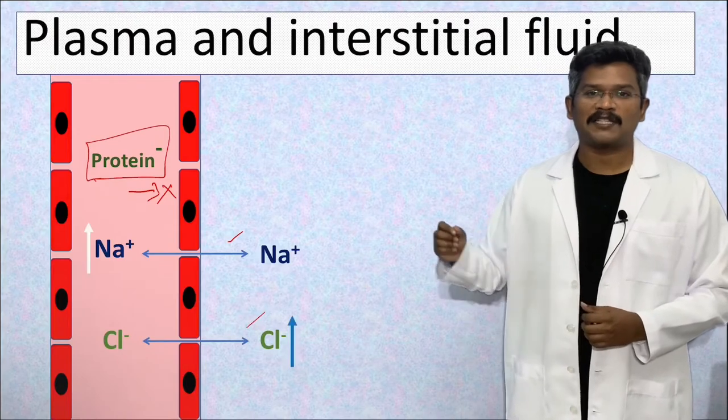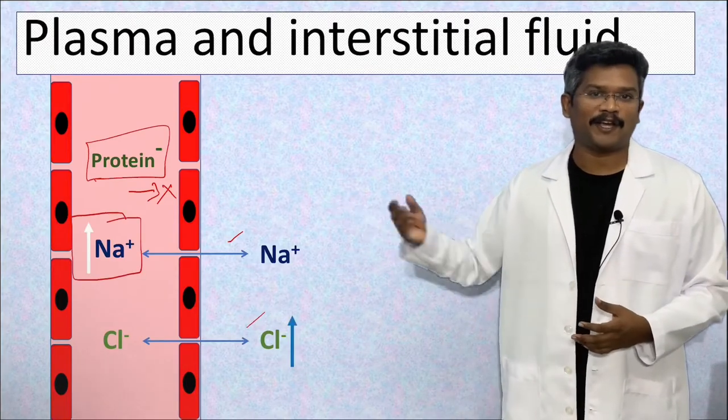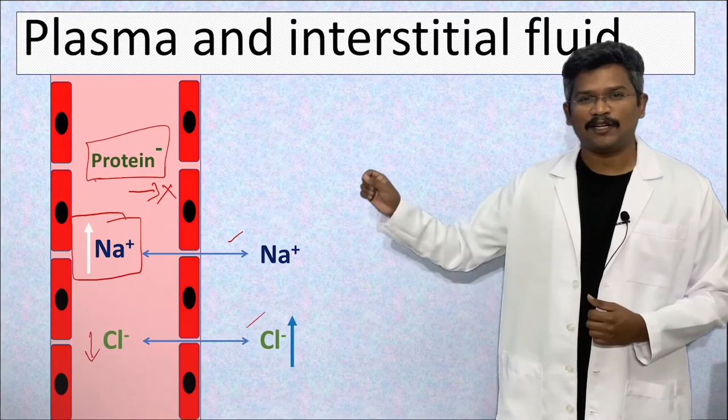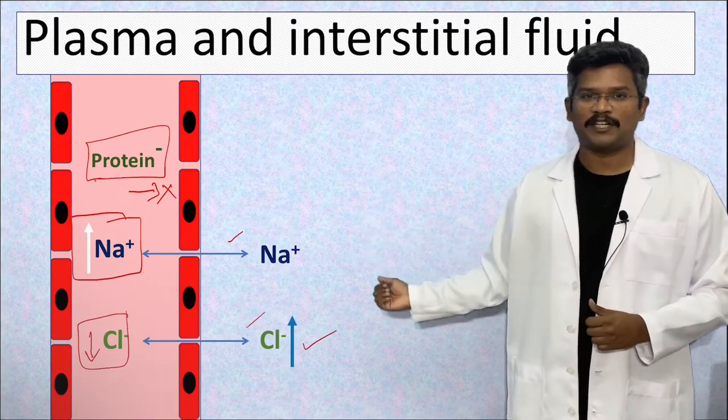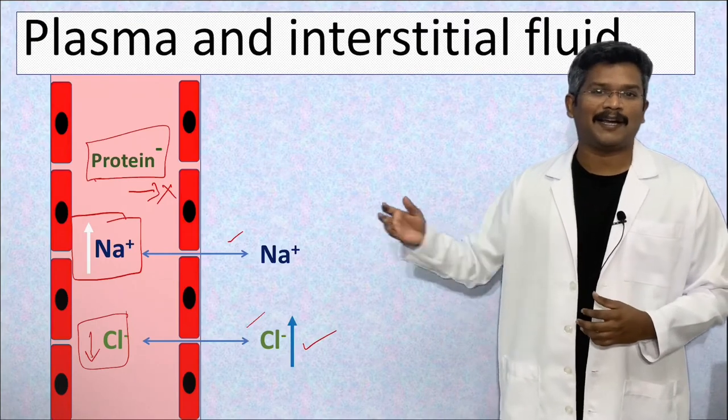The concentration of sodium is higher in the plasma because of electrostatic attraction by the anionic protein. The concentration of chloride is slightly lower in the plasma as compared to the interstitial fluid. That is because of electrostatic repulsion by the anionic proteins.